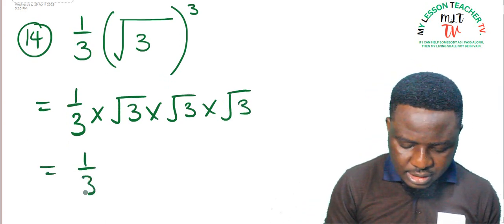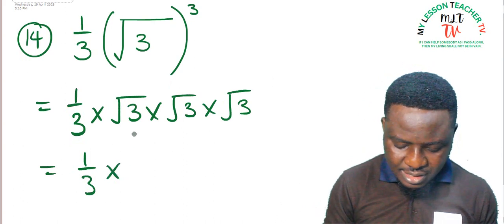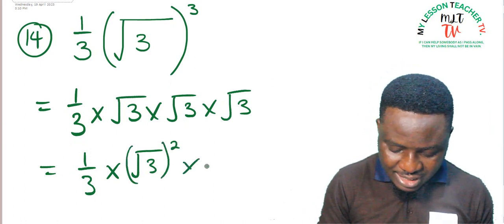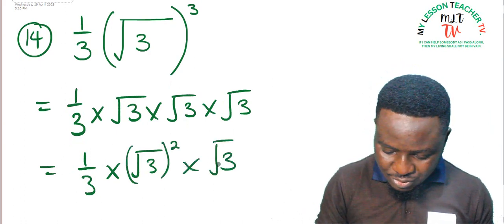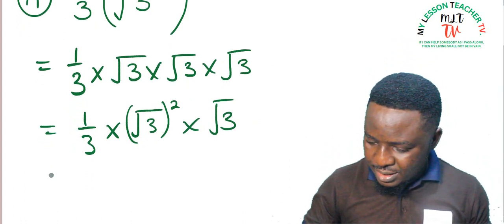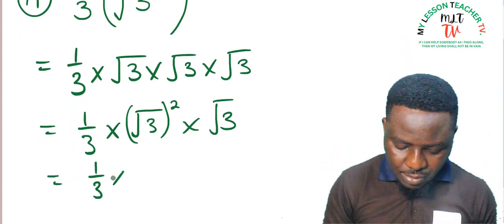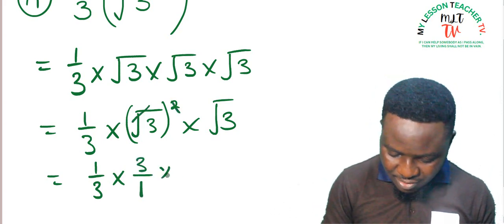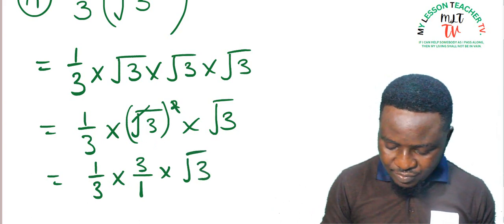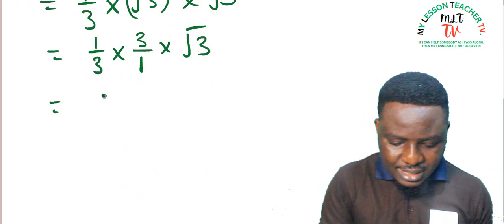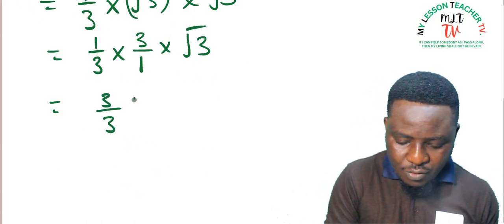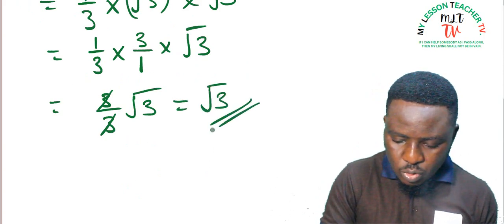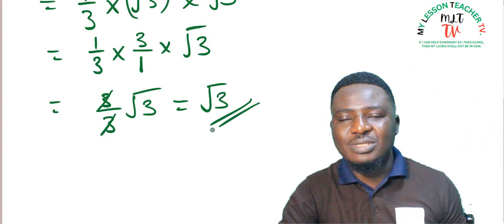Simplifying: one-third times root 3 times root 3 gives root 3 squared, which equals 3. So this is one-third times 3 times root 3 = 3 over 3 times root 3 = 1 times root 3 = root 3. So the answer is root 3.